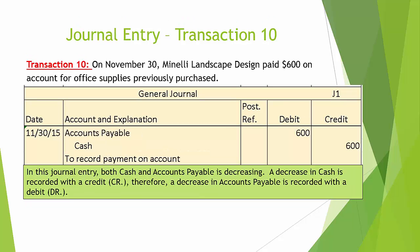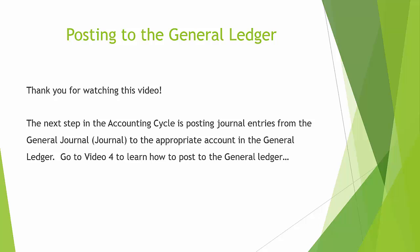Transaction number 10: On November 30, Minnelli Landscape Designs paid $600 on account for office supplies previously purchased. In this journal entry, both cash and accounts payable are decreasing. A decrease in cash is recorded with a credit; therefore, a decrease in accounts payable is recorded with a debit.